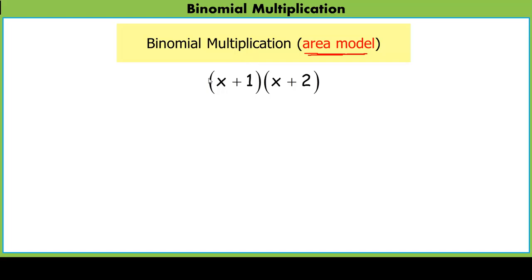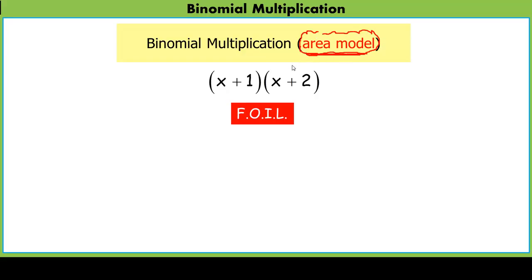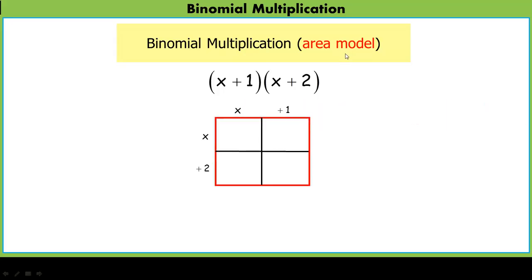A lot of people, when they think of binomial multiplication, think of the acronym FOIL, which means first, outside, inside, last. That's commonly taught and commonly learned, and I use it a lot, but we want to learn something way more powerful. The area model is going to extend past just binomial multiplication, so we're not really going to use the FOIL method. Bye-bye FOIL — we're going to use an area model.